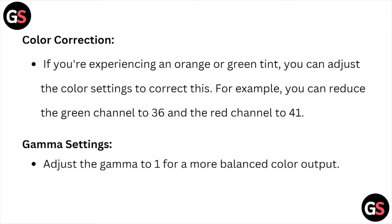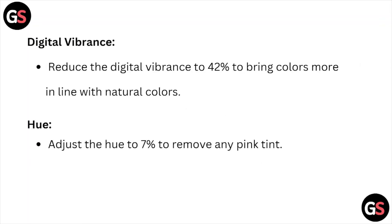When it comes to color correction, if you have been experiencing an orange or green tint, you can adjust the color settings to correct this. For example, you can reduce the green channel to 36 and the red channel to 41. When it comes to the gamma settings, adjust the gamma to 1 for more balanced color output. Reduce the digital vibrance to 42% to bring colors more in line with natural colors.